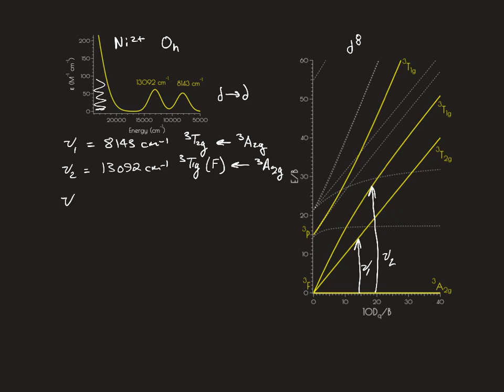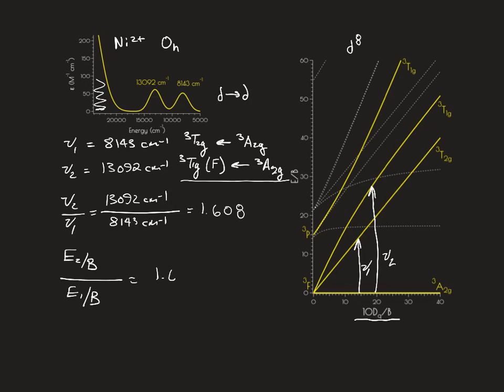What we're going to do is we're going to look at the ratio of ν2 over ν1. This ratio, which equals 1.608, is going to tell us where along our 10Dq/B axis we need to look for our different vertical excitations. What we're looking for is where the energy corresponding to the triplet T1g excited state over the ratio of E1/B corresponding to the triplet T2g excited state is going to equal 1.608.